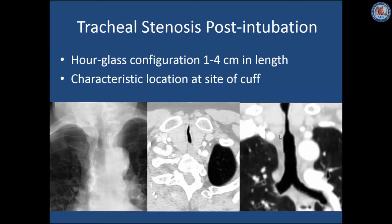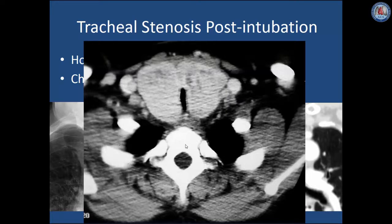There are a number of entities that cause tracheal narrowing. Post-intubation tracheal stenosis is represented as an hourglass configuration, generally one to four centimeters in length, that characteristically occurs at the site of a cuff. It will be seen in the proximal trachea as an hourglass narrowing on a chest radiograph, with the correlate on coronal CT imaging as a smooth concentric narrowing with a typical hourglass configuration. On the axial image one can see significant stenosis at the level of the thoracic inlet. CT is useful in differentiating this stenosis from narrowing caused by extrinsic compression by an adjacent mass, most commonly caused by enlargement of the thyroid gland, as in this case with diffuse thyroid enlargement causing tracheal narrowing.